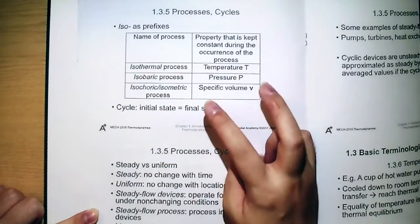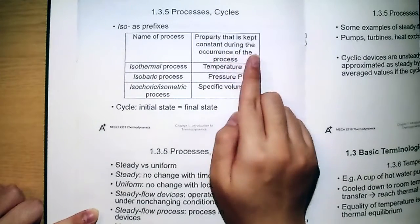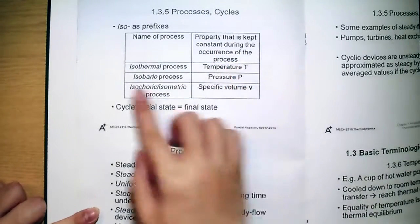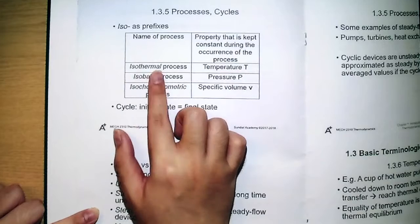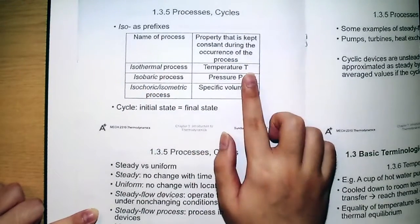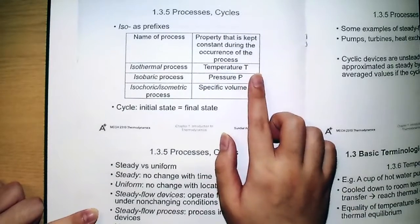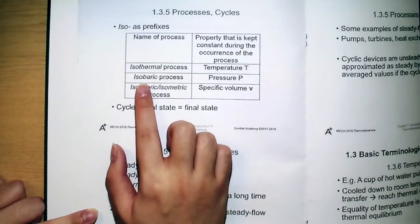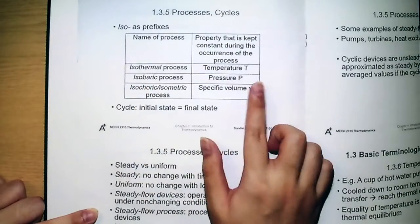And at the right column, it has a property that is kept constant during the occurrence of process. For isothermal, because thermal means temperature and iso means no change, so that the temperature is kept constant.